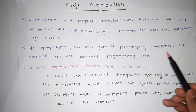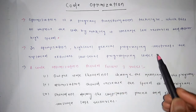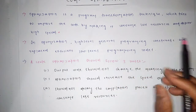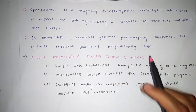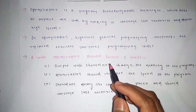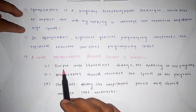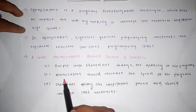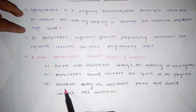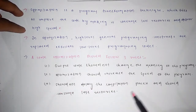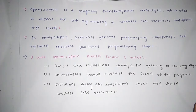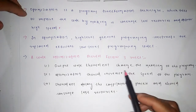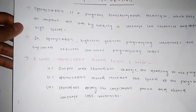In optimization, high-level general programming constructs are replaced with efficient low-level programming codes. As you already know, when the user writes a code it is in the high-level language and the compiler automatically converts it into low-level machine language. There are three rules by which code optimization takes place: first, output code should not change the meaning of the program; second, optimization should increase the speed of the program; and third, the code should not delay the compilation process and should consume less resources.